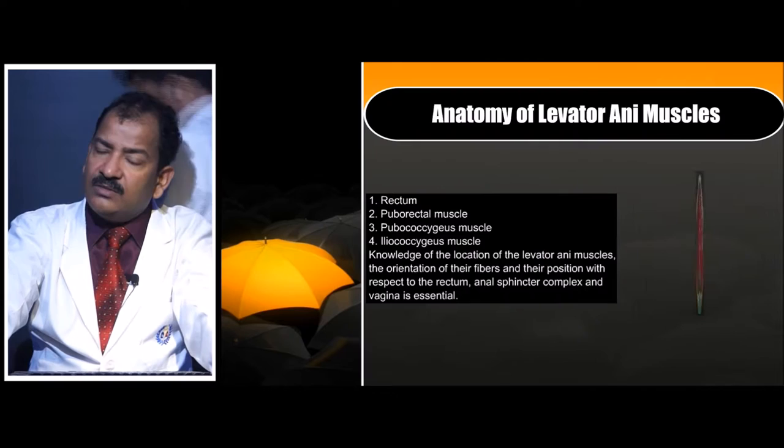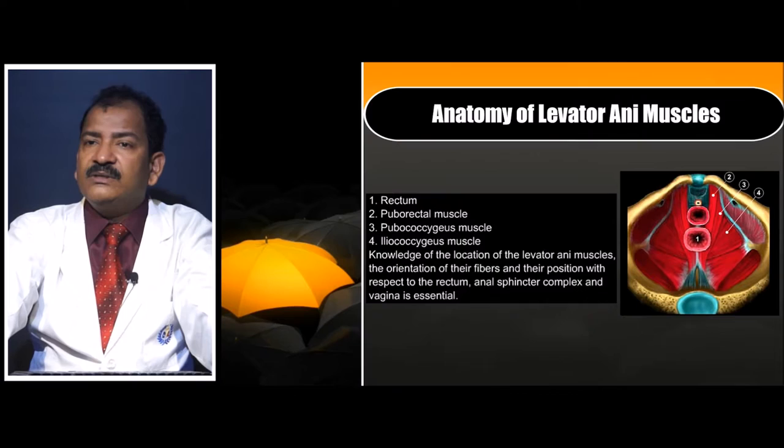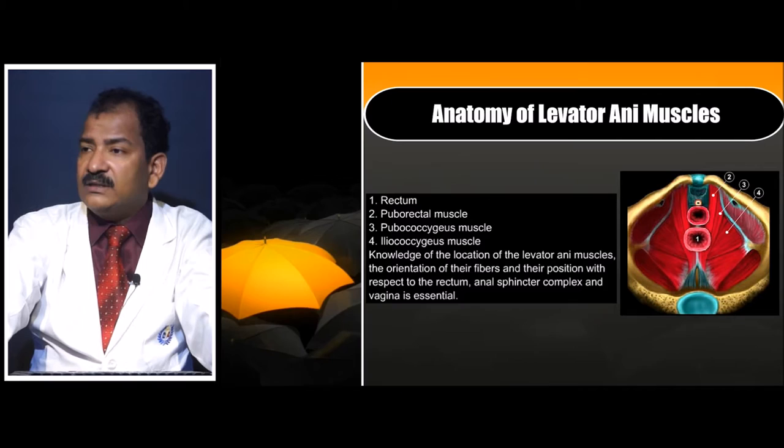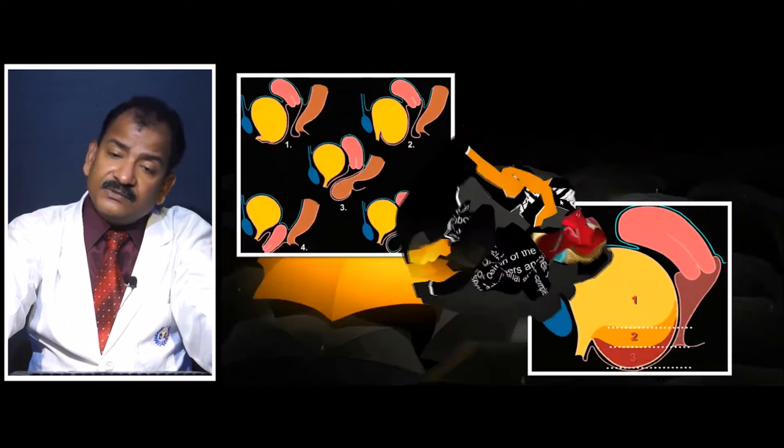The anatomy of the levator ani is important. As discussed before in the boat-in-dock analogy, the levator ani muscle makes the main platform over which all the organs of the pelvis rest. You have different supporting structures like the pubourethral ligament, pubococcygeal ligament, iliococcygeal ligament, uterosacral ligaments, and transverse ligament. Weakness in these ligaments leads to prolapse.